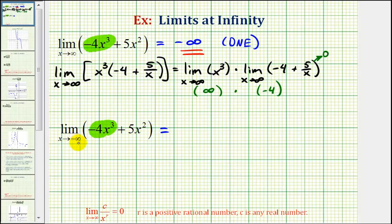As x approaches negative infinity, we're now cubing a very large negative number. And since it's being raised to an odd power, it would still be a very large negative number, but then we'd multiply that large negative number by negative four, making it an even larger positive number. And therefore, this limit is going to equal positive infinity, which again does not exist.